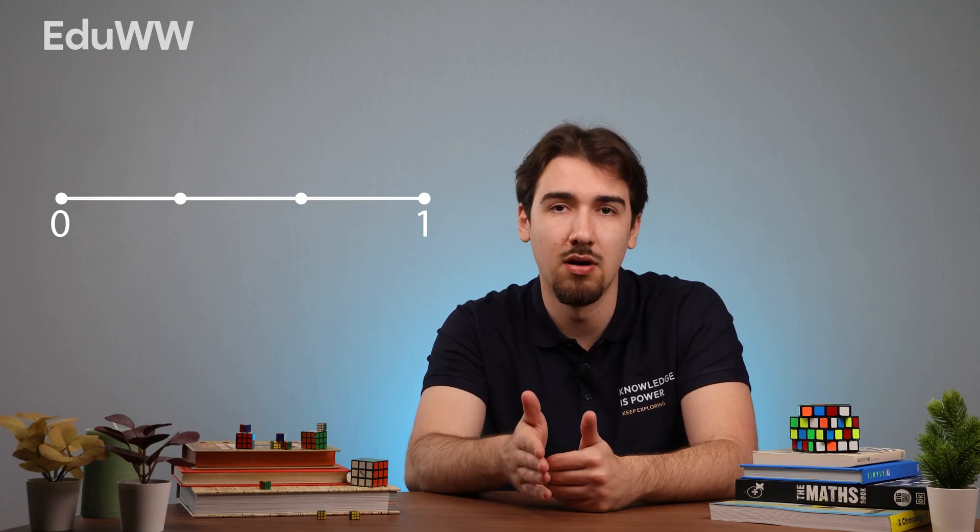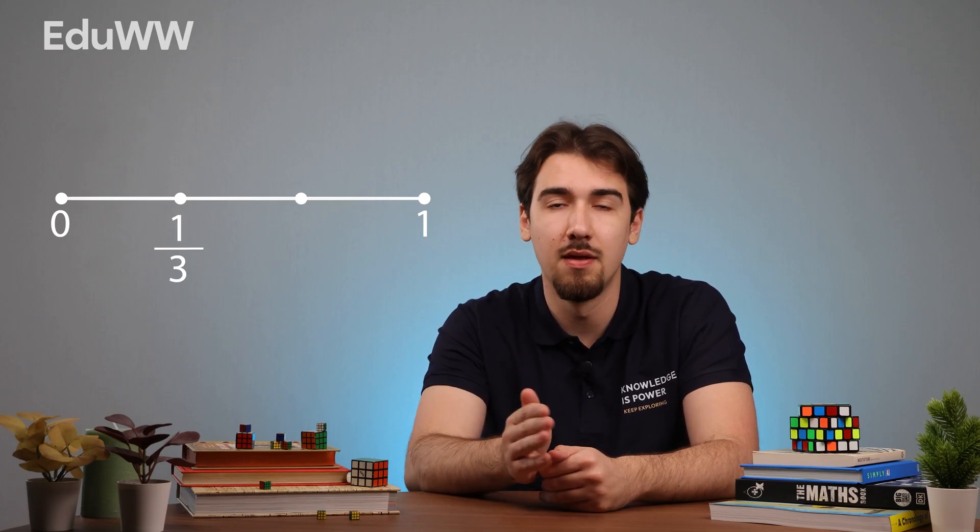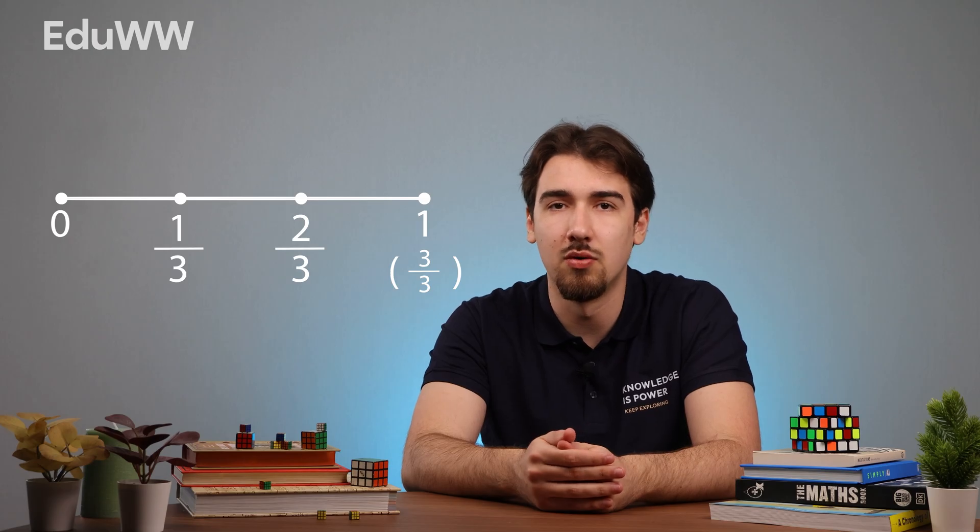So we're going to put a mark here on one third, there on two thirds, and in the end, the final mark will go on three thirds, or as we call it, just one whole. Because if you split something into three parts, and then basically join those three parts, you will get the whole yet again. As we are looking for two thirds, we're going to put a dot right here on two thirds, and we've done it.